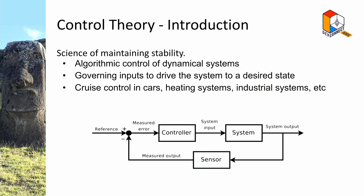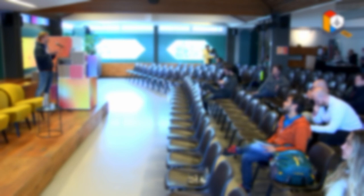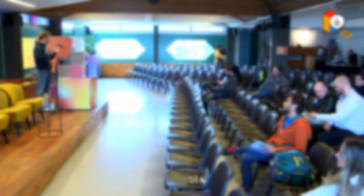Control theory is a well-known field of engineering that exists long before crypto. Very basically, it's the science of maintaining stability — algorithmic control of dynamical systems. It's used everywhere in the real world, like industrial systems, probably like the heating system of this room.